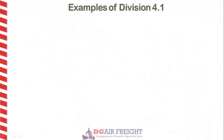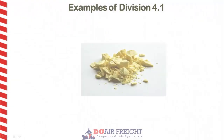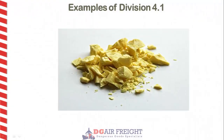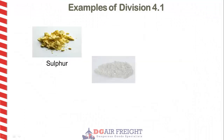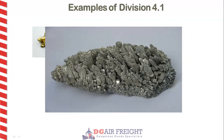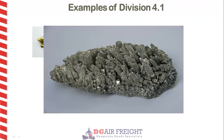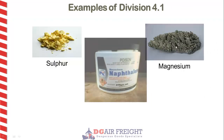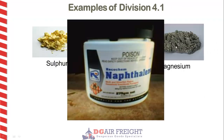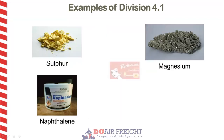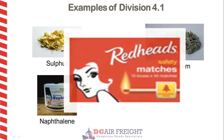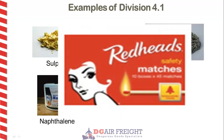Examples of Division 4.1 are sulfur, magnesium, naphthalene, and safety matches.